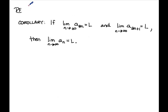To begin the proof, we'll use a corollary from earlier in the course: if you have a sequence and you know that the limit as n goes to infinity of the even-indexed terms equals L, and also that the limit as n goes to infinity of the odd-indexed terms equals L, then the limit of the sequence itself must be L. We're going to use that in this proof.